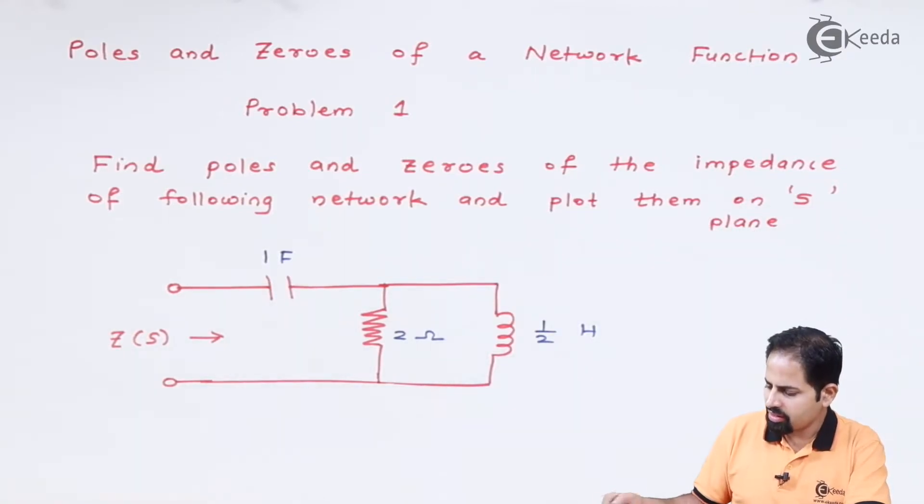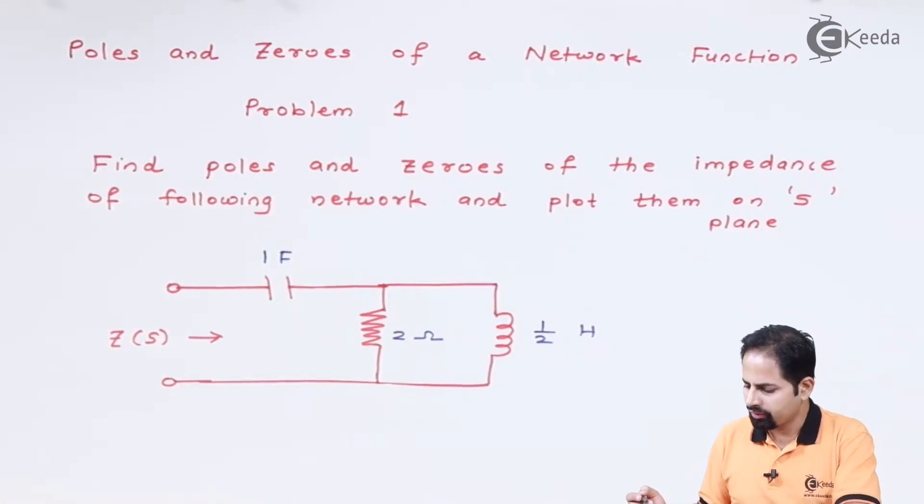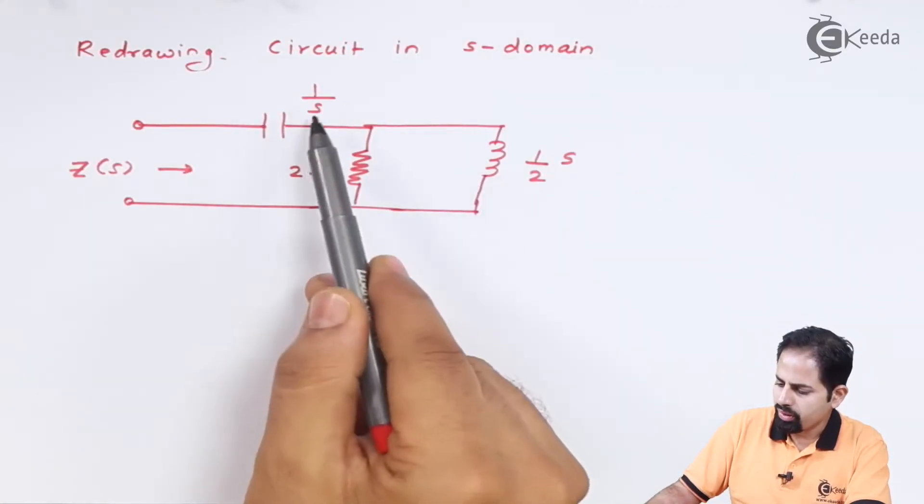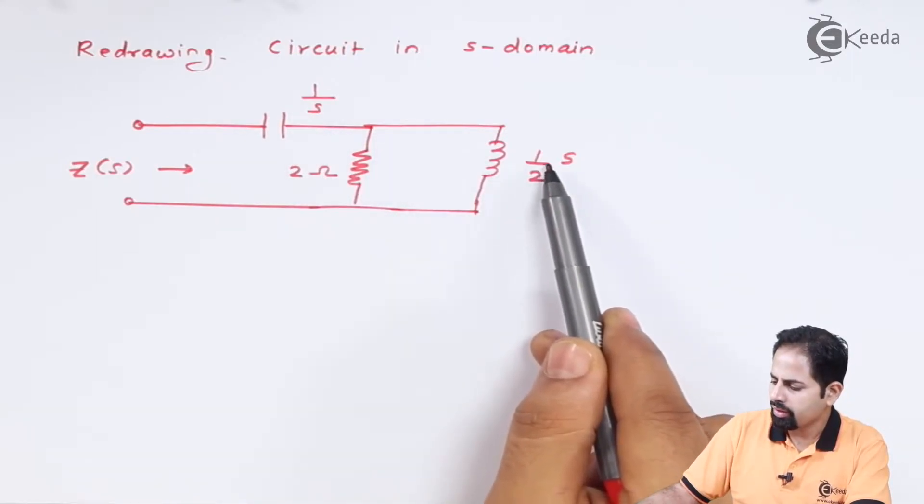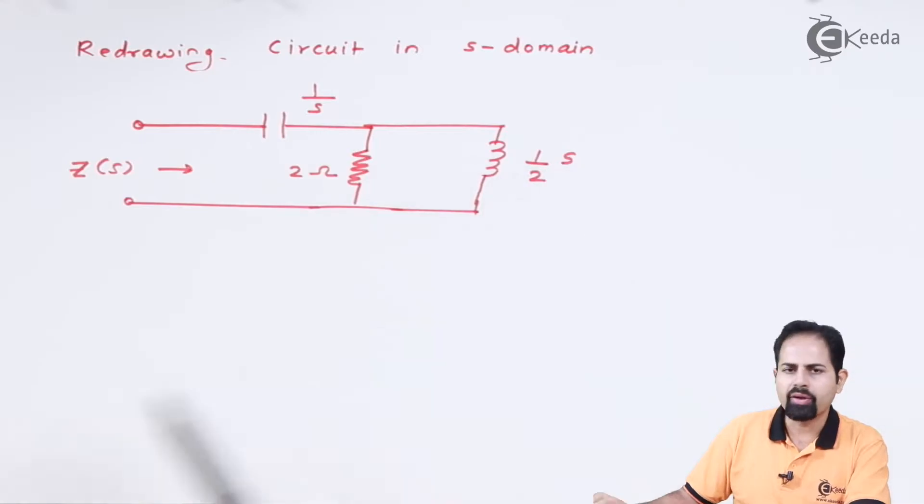Let us redraw this circuit in S domain. Here I have drawn this circuit in S domain. Capacitor is replaced with 1 upon S, inductor with S into L that is 1 by 2, and resistance is unaffected.